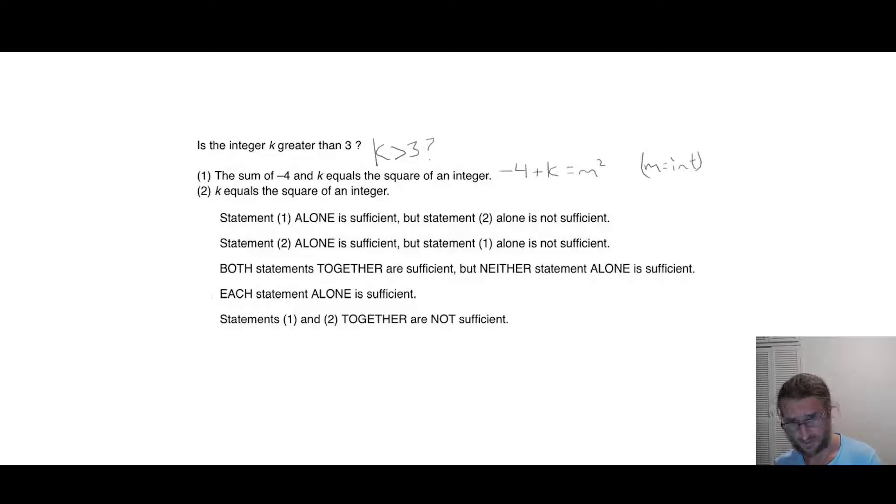So the important thing here in Statement 1 is that this is going to be invariably positive. We know that's positive because it's a square, right? So if the sum of -4 and k equals the square of an integer, then -4 plus k must also be positive because the right side is positive.